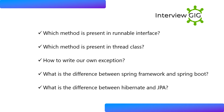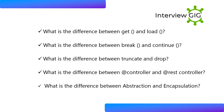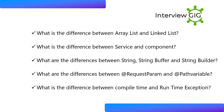Which method is present in the Runnable interface? Which method is present in the Thread class? How to write our own exception? What is the difference between Spring Framework and Spring Boot? What is the difference between Hibernate and JPA? What is the difference between get and load? What is the difference between break and continue? What is the difference between truncate and drop? What is the difference between @Controller and @RestController? What is the difference between abstraction and encapsulation? What is the difference between ArrayList and LinkedList? What is the difference between @Service and @Component?